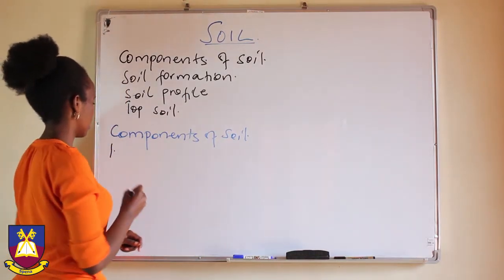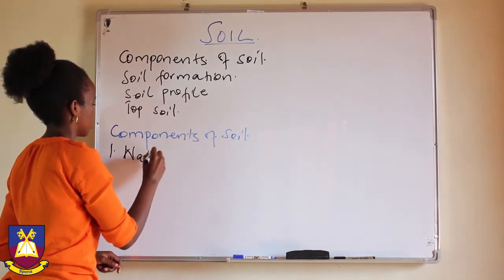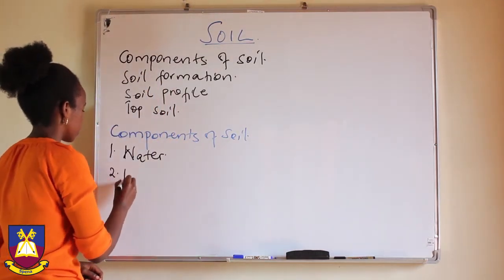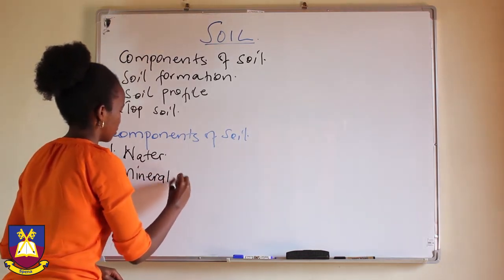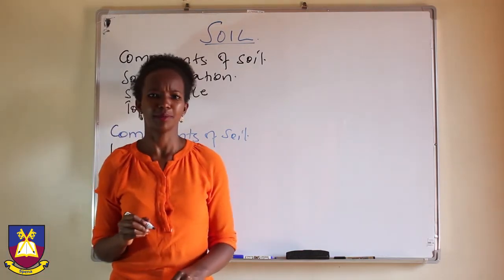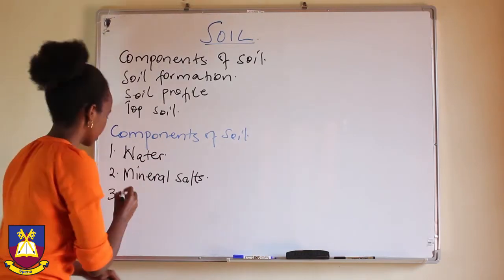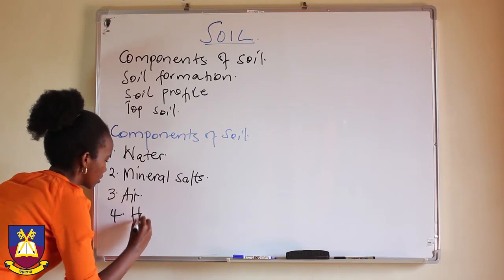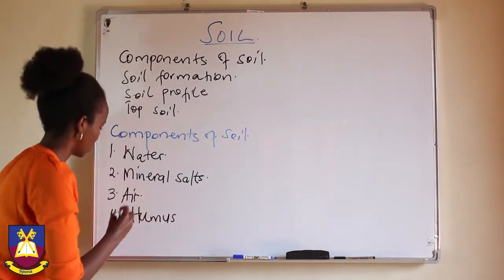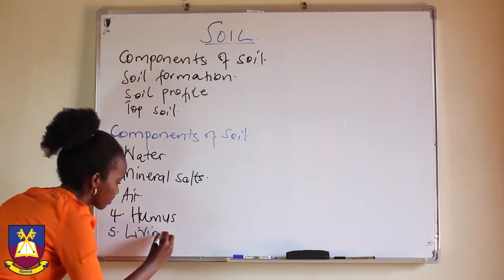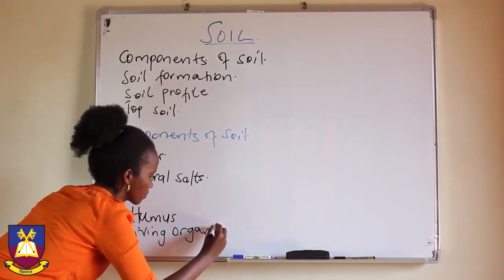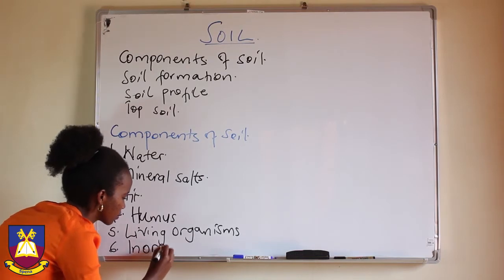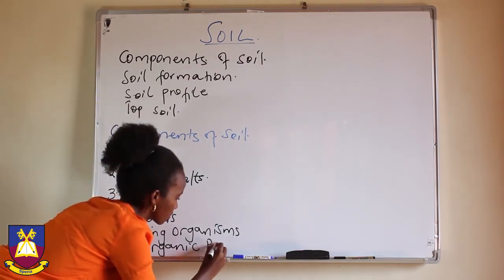The components of soil are: water, mineral salts, air, humus, living organisms, and inorganic particles. Those are the major components of soil that we are going to look at.